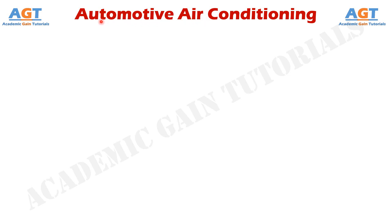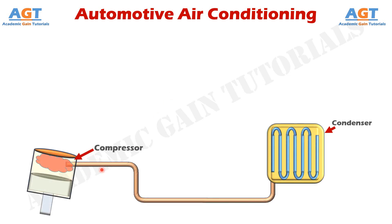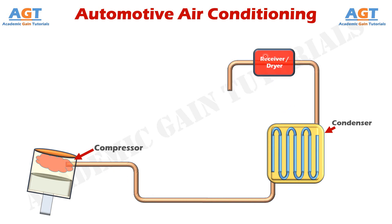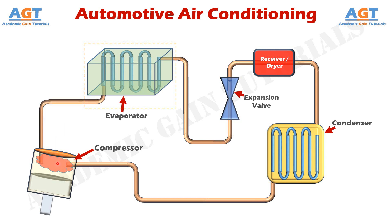Before starting to discuss how it works, let's know what components or parts an automotive air conditioning system has. First of all, here we have a compressor. After that, attached to the compressor, there is a condenser. After that, attached to the condenser, here we have a receiver — we can also call it a dryer. Then, connected to this receiver or dryer, there is an expansion valve. And after that, connected to this expansion valve, here we have an evaporator where the refrigeration effect or the cooling effect takes place. This evaporator is again connected back to the compressor where we started. Thus a loop or a cycle is formed.